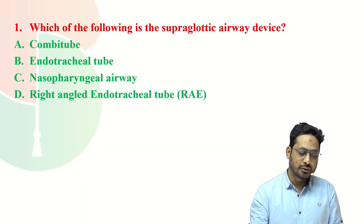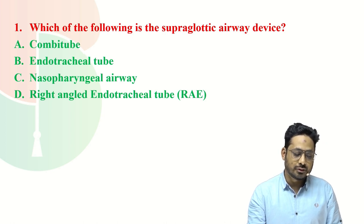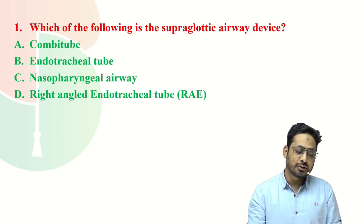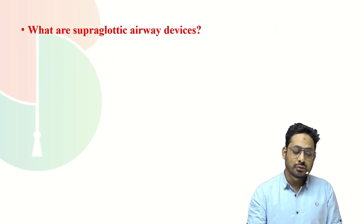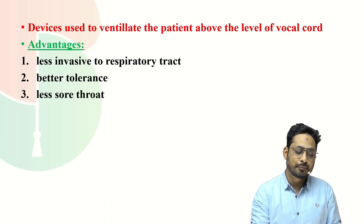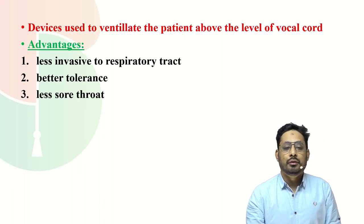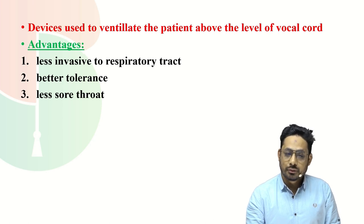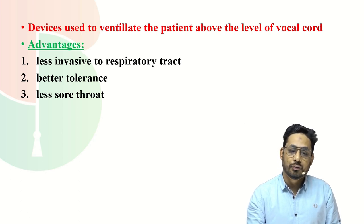So the first question is: which of the following is a supraglottic airway device? The options are combi tube, endotracheal tube, nasopharyngeal airway, and right-angle endotracheal tube. Before discussing the answer, we should first know what supraglottic airway devices are. Devices used to ventilate the patient above the level of the vocal cord are called supraglottic airway devices.